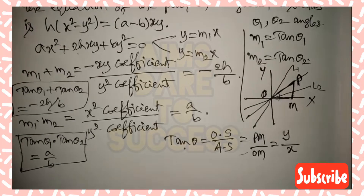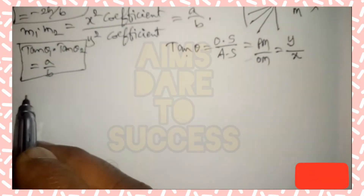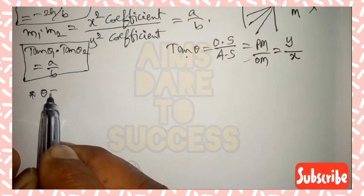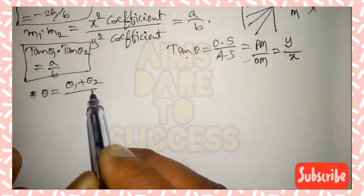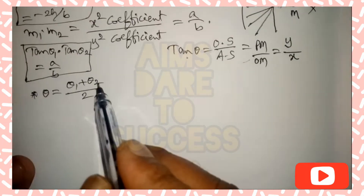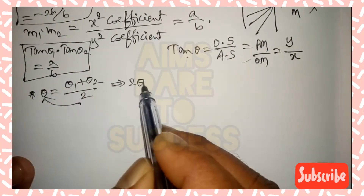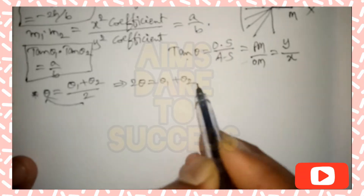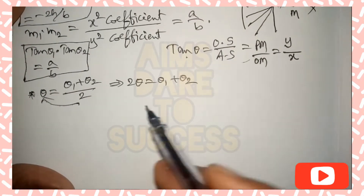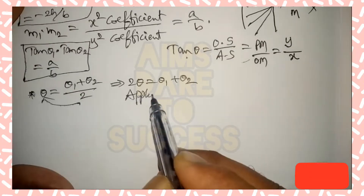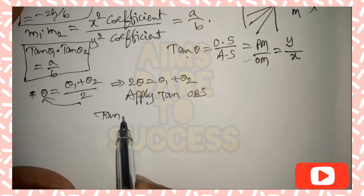We substitute tan θ = y/x. For the angular bisector condition, we use θ = (θ₁ + θ₂)/2. Cross-multiplying gives 2θ = θ₁ + θ₂. Since we have a tan-related theorem, we apply tan to both sides to get tan 2θ = tan(θ₁ + θ₂).